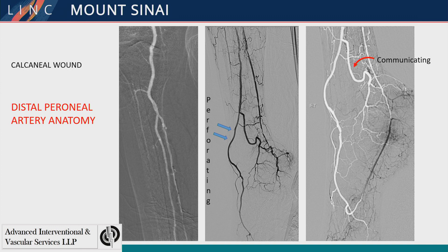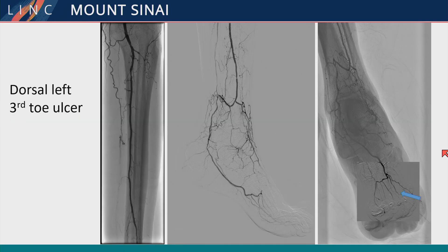Here's an example — a patient with a calcaneal wound who nicely demonstrates distal peroneal artery anatomy. In this patient it's likely an occluded rather than hypoplastic anterior tibial artery. Distally, the peroneal artery through its perforating branch — going through the interosseous membrane — supplies the dorsalis pedis segment, and through its communicating branch, after reconstituting the pedal arch, provides wound supply to this calcaneal wound but also communicates with the posterior tibial artery. This is normal anatomy, and in a diseased state the enlargement of that vessel makes it easier to see.